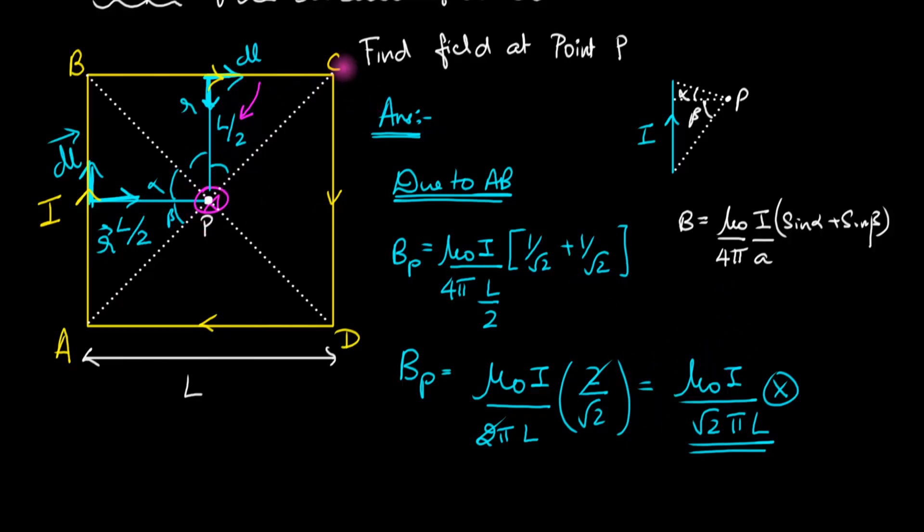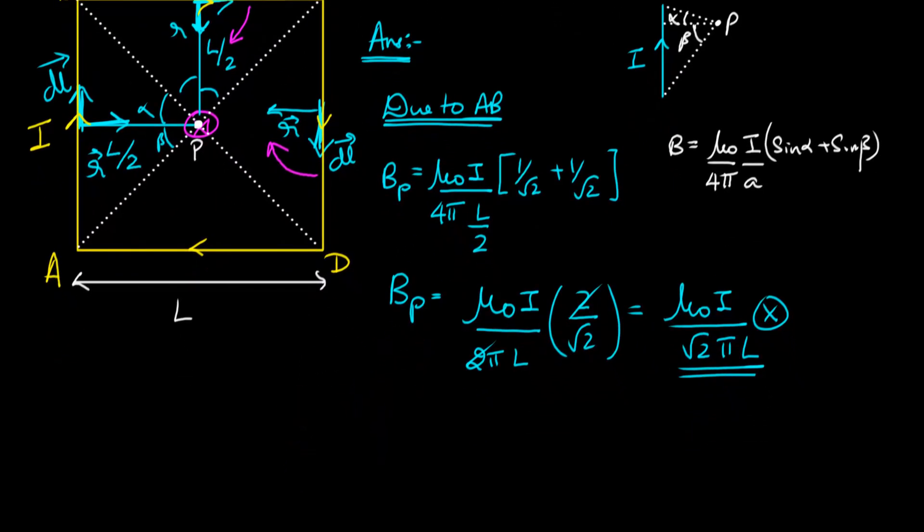What about the magnetic field due to CD? Same exercise. DL is this way, R is this way, DL cross R gives inward direction. You can verify that AD is also inward. Hence, this problem is solved.